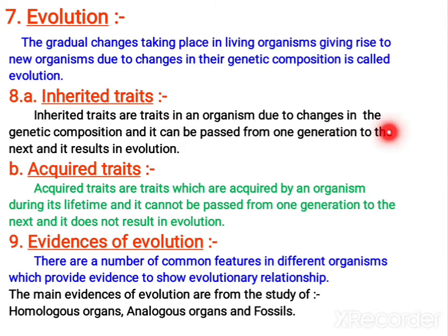Inherited traits are the traits in an organism. It is mainly the change in genetic composition — the genes undergo changes. That is why the offspring of the parents may resemble the parents, not exactly, but there may be some resembling features. They can inherit the characters from their parents if the genes are being passed from parents. They can get some characters of parents. Even you can show some features resembling your grandparents, because those are inherited traits.